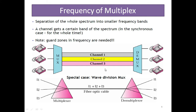In frequency division multiplexing (FDM), the whole spectrum is separated into smaller frequency bands. Whatever the whole frequency band is given, that band is divided into very small frequency bands, and each smaller frequency band is allocated to each user and each channel. That channel gets a certain band of the spectrum for the whole time. A guard zone of frequency band is needed.